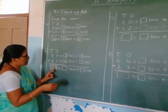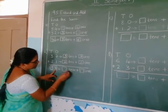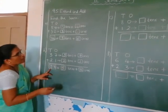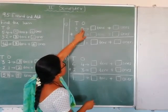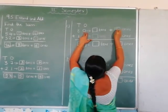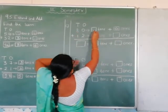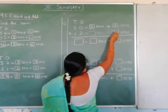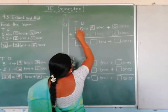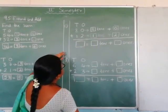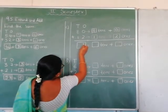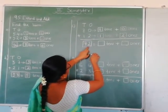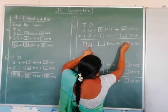Now again, ones place — see which number is here? It is 8 — write 8 in the ones place. Now 5 is in the tens place, so write 5 here. Now 2 is in the tens place — write 2 here. And 1 is in the tens place — write 1 here. Now let us add: 0 plus 2 is 2 — write 2 here. Next: 8 plus 1 is 9. Which number is in the ones place? It is 2 — write 2 here.